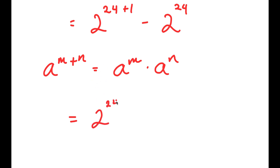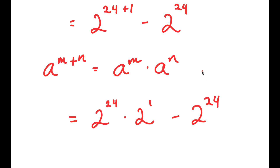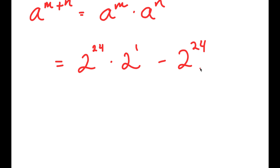So now 2 to the power of 24 plus 1 turns into 2 to the power of 24 times 2 to the power of 1, and I still have this minus 2 to the power of 24. From here, what I'm going to do is factor out 2 to the power of 24, because notice how both of these terms have 2 to the power of 24 in them.